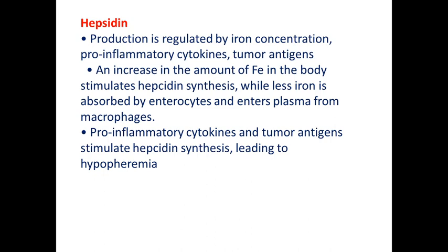Pro-inflammatory cytokines and tumor antigens can stimulate hepcidin synthesis and lead to hypoferremia. That is why during many chronic disorders anemia may develop — chronic disorders can increase production of pro-inflammatory cytokines. Or, for example, tumors can produce tumor antigens, stimulating hepcidin synthesis, and hepcidin decreases absorption of iron in the GIT and causes anemia.